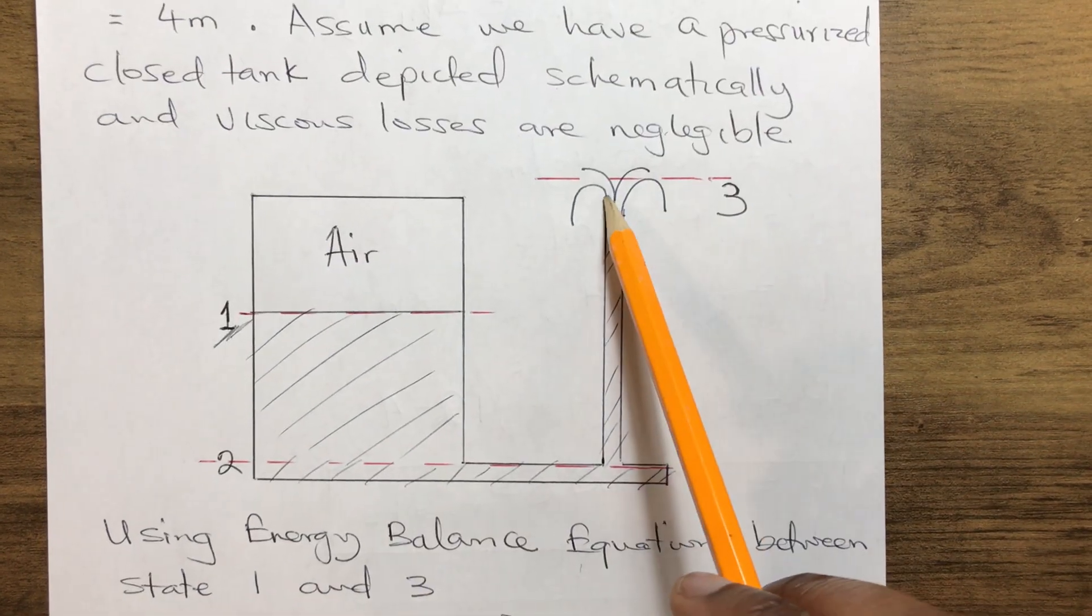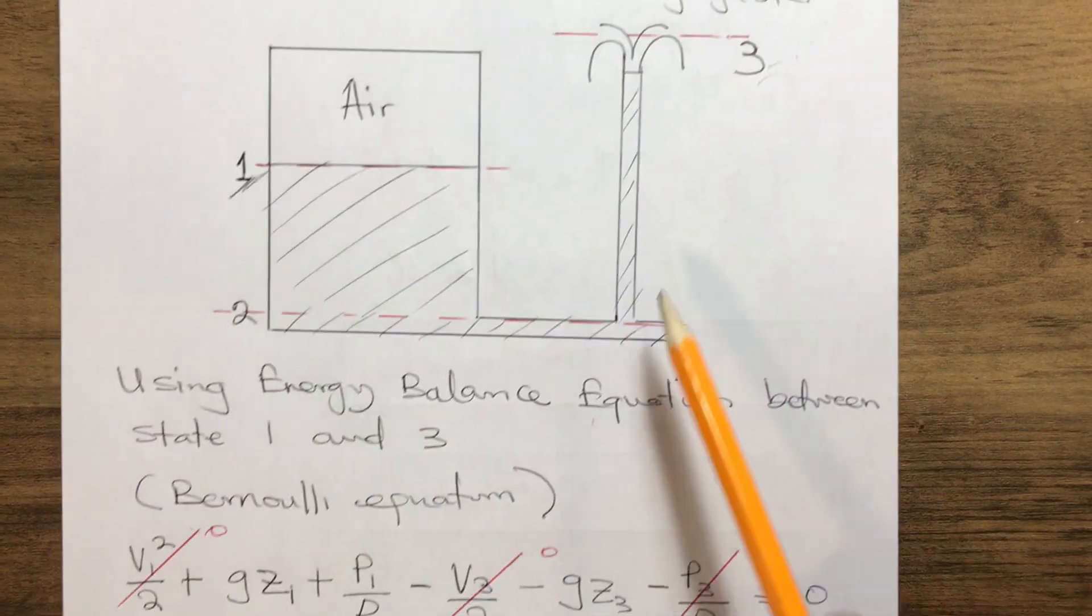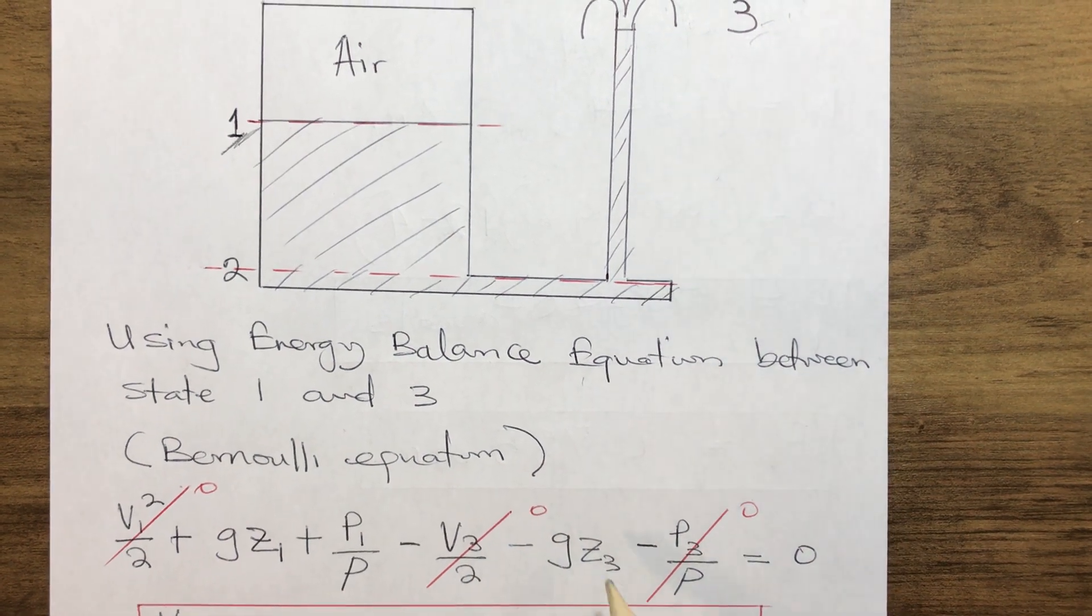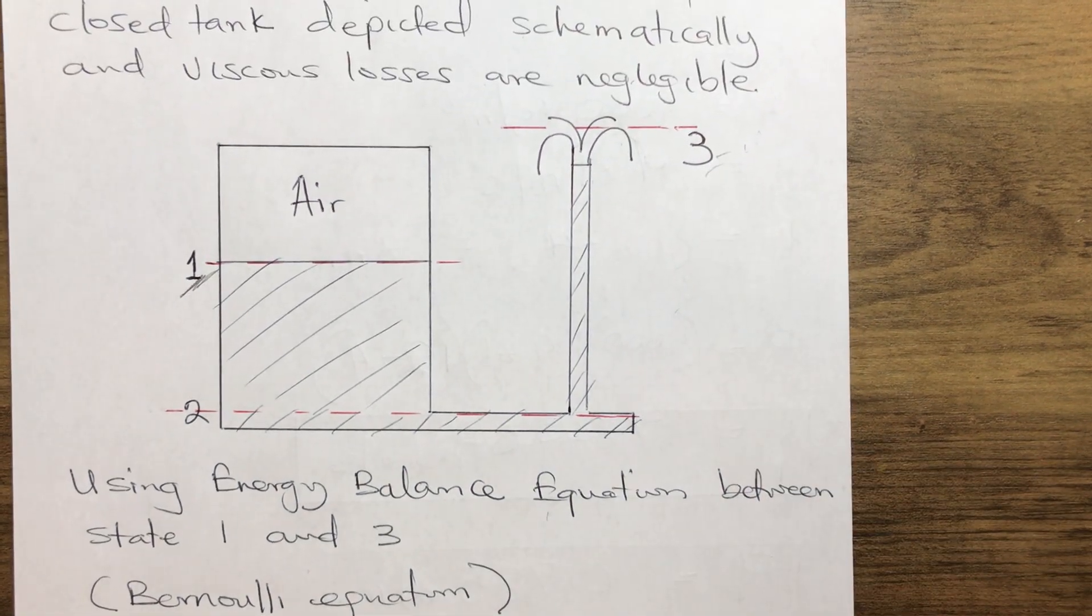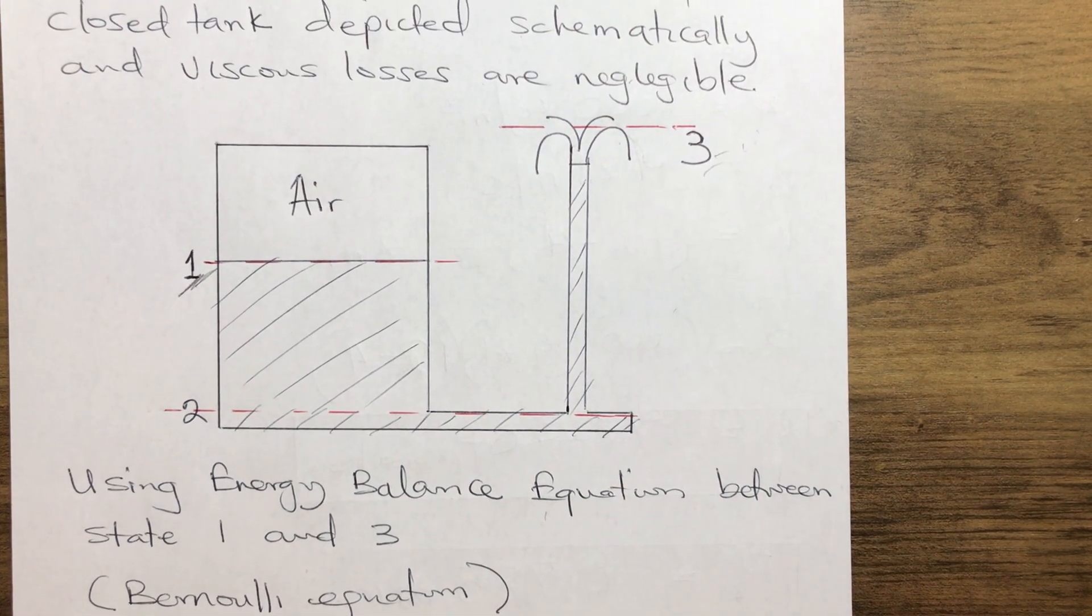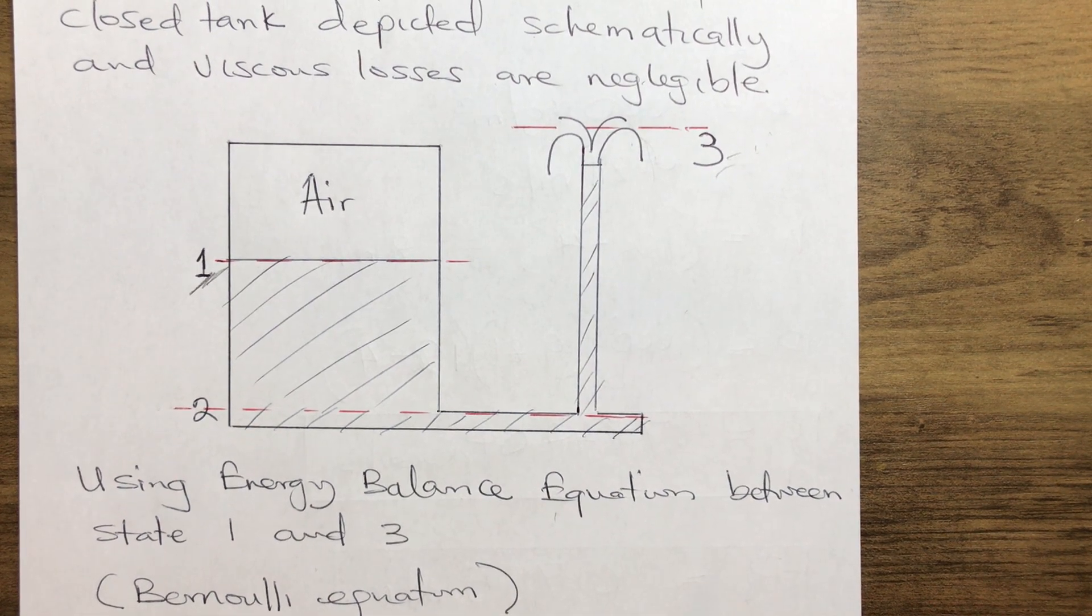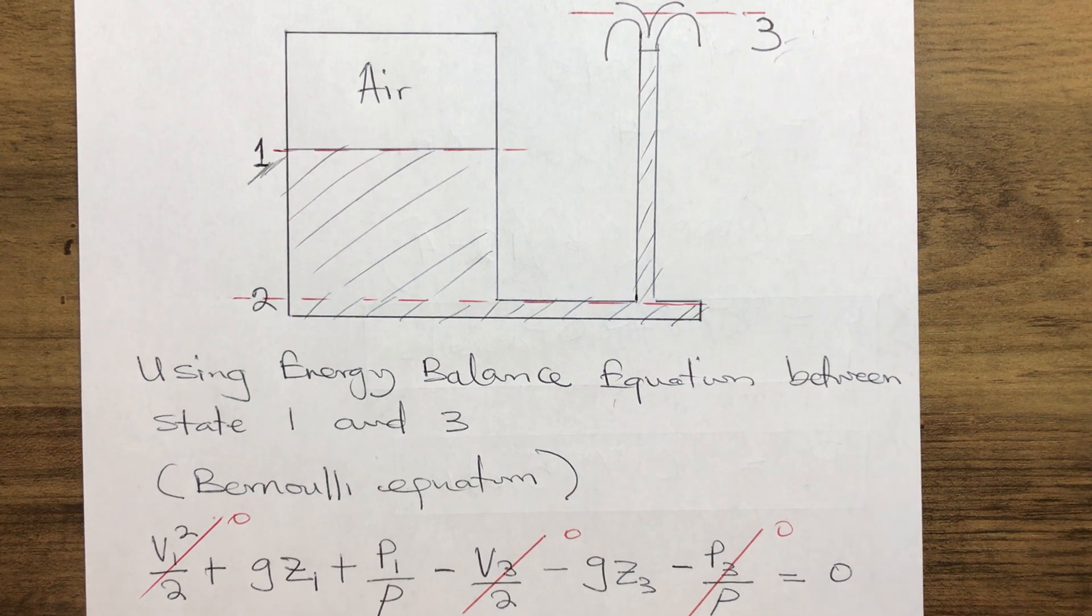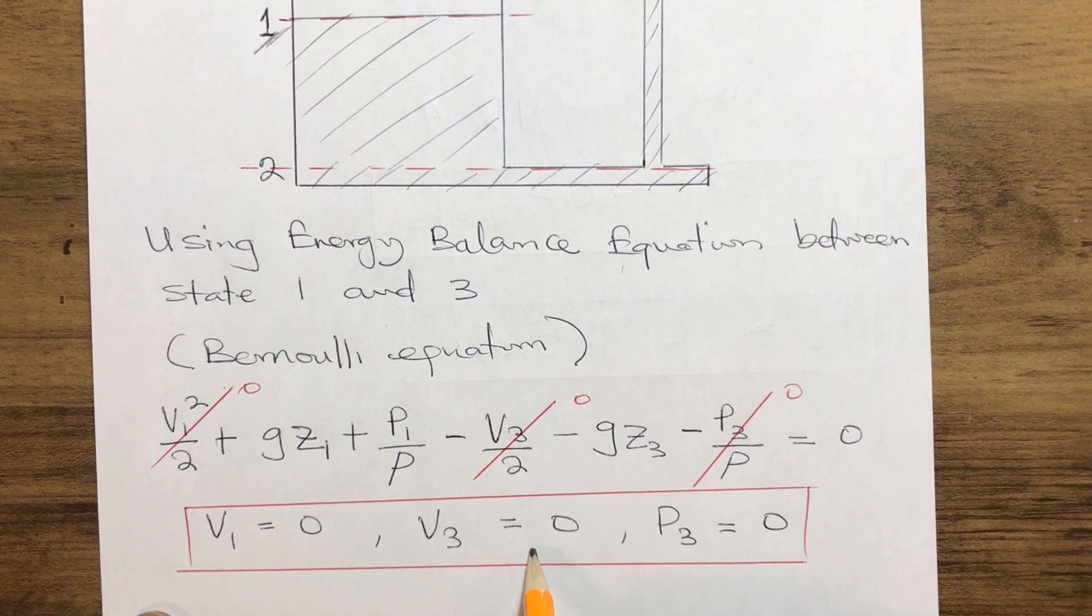We know that the velocity of the jet at the outside is zero, so we have our v3 equals zero, and we have our pressure at 3 which equals zero. Since we are dealing with stationary aerodynamic fluid, therefore our v1 equals zero and our v3 equals zero.